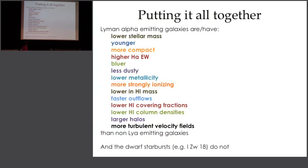Lyman-alpha emitting galaxies have lower stellar mass, are younger and more compact, have higher H-alpha equivalent widths, are bluer, less dusty, more strongly ionizing, have lower H1 mass, faster outflows, lower H1 covering fractions and column densities, larger halos, and more turbulent ionized ISM. But dwarf galaxies don't fit into this situation very well.